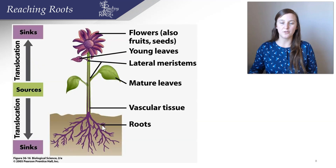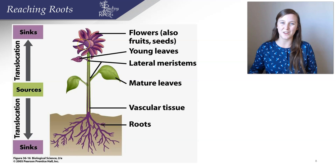This is a graphical representation of sources and sinks. Again, sources are mature leaves. Sinks are areas that are not photosynthesizing, such as young leaves, flowers which will develop into fruit with seeds inside, and roots which do not photosynthesize.